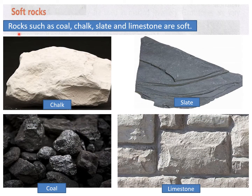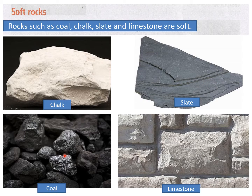Now soft rocks — rocks such as coal, chalk, slate, and limestone are soft. So these four kinds of rocks are soft rocks. Chalk can be easily broken. All these are very soft. Slate also, if it falls down, it will break. Coal is also a soft rock.